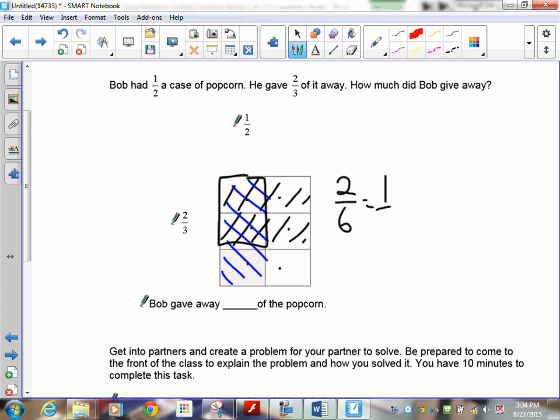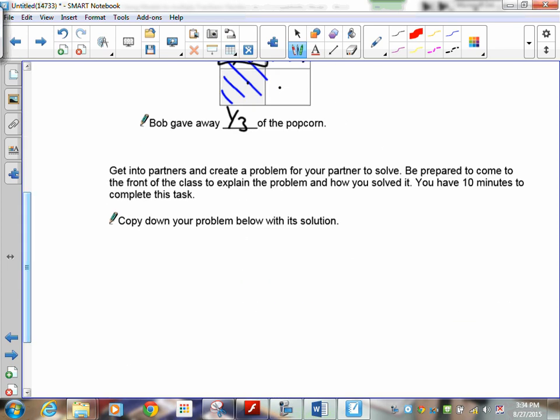Now I reduce that—it's one-third. So Bob gave away one-third of the popcorn. Now at this point, if you're in the classroom, I'd have you create a problem for your partner to solve, and then you get to come up and explain how you did it.